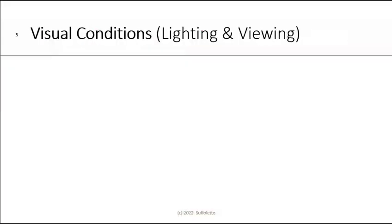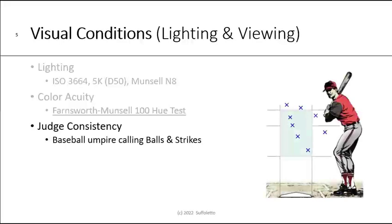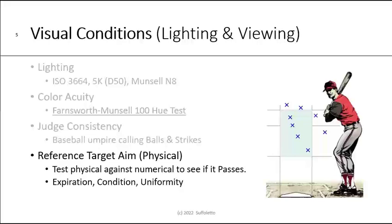Let's discuss the visual lighting and viewing conditions in more detail. We want to follow ISO 3664, which determines the correlated color temperature of 5000 Kelvin and a surround of Munsell N8. You probably want to have your judges evaluated for their color acuity — a very popular test is the Farnsworth Munsell 100 Hue test, and here's a link to do an online version. Judges must be tested for consistency. The analogy I use is like a baseball umpire — are they being consistent when calling balls and strikes? The reference target is probably a physical aim, such as the Pantone color guide swatch book or fan guides. We want to test that physical standard against numerical values to verify it passes, and we have to be concerned about its expiration, condition, and uniformity of printing.